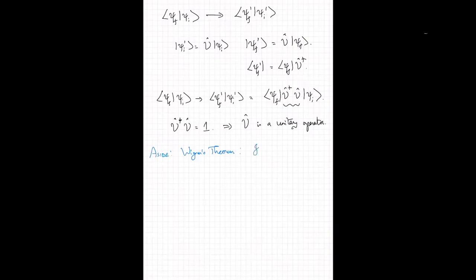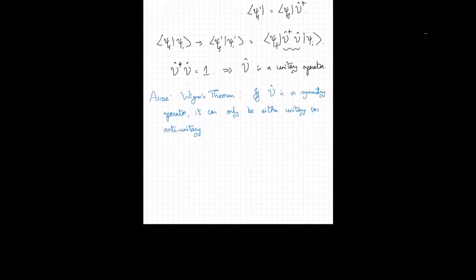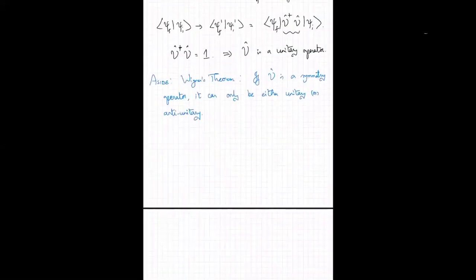I invite you to look at what is called Wigner's theorem in quantum mechanics — it is simple to state but very tricky to prove. Wigner's theorem tells you that if U is a symmetry operator, it can only be either unitary or anti-unitary. We will concentrate on the case where U is a unitary operator.